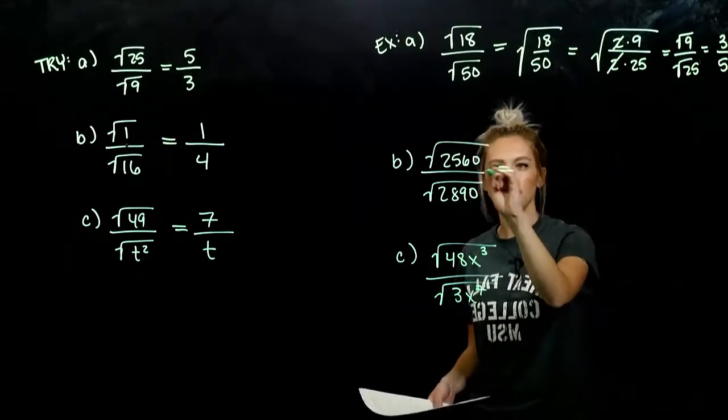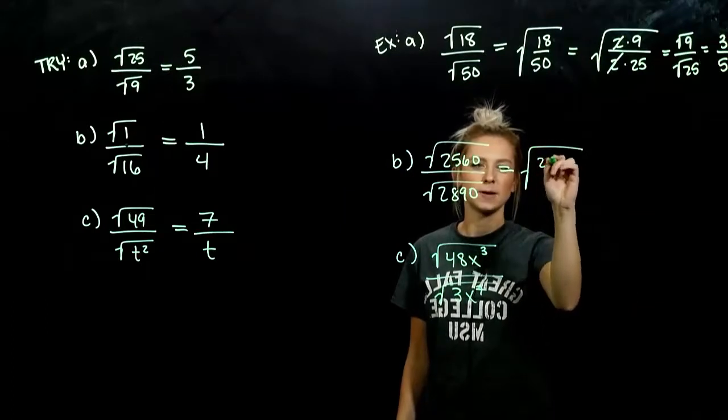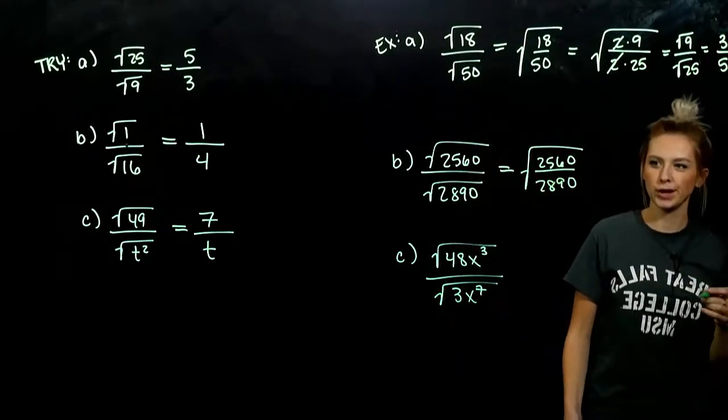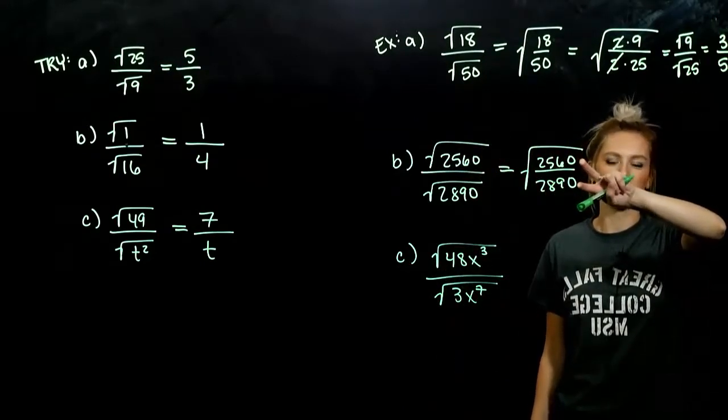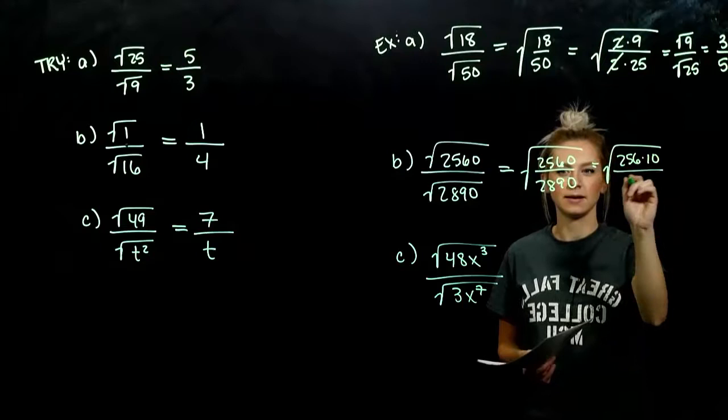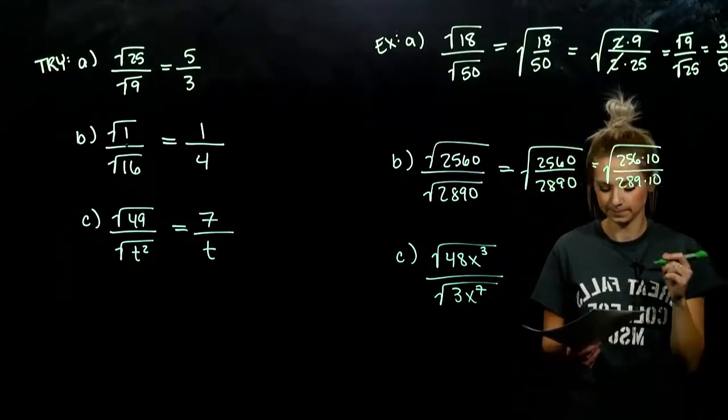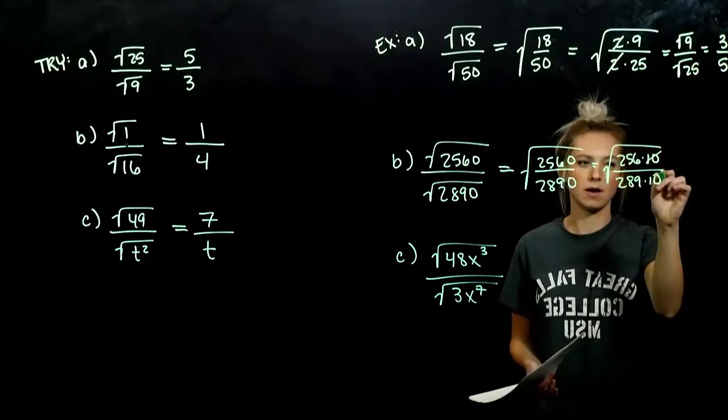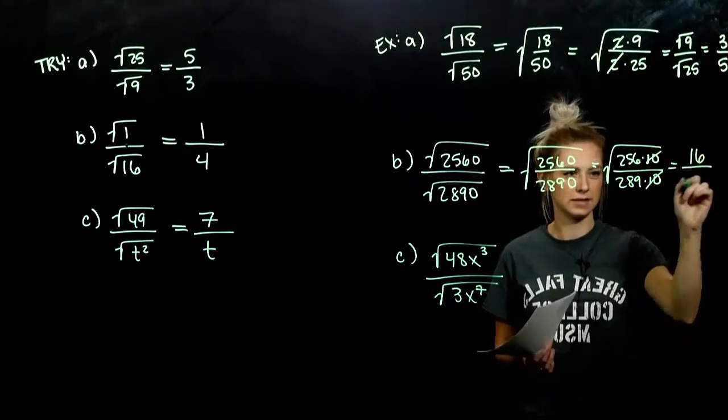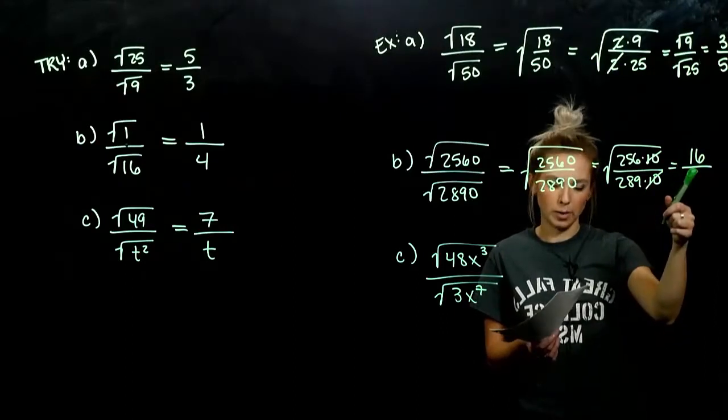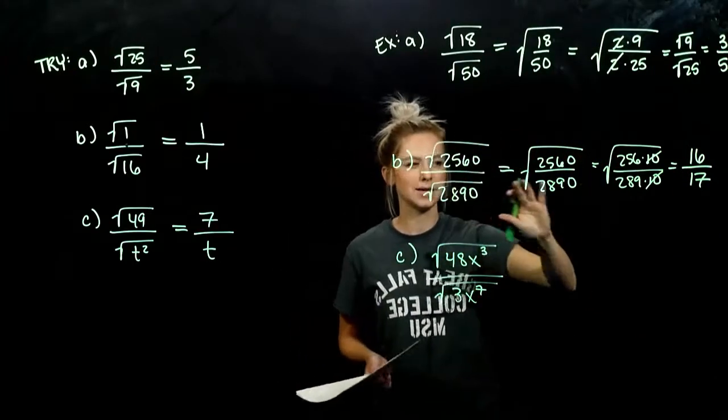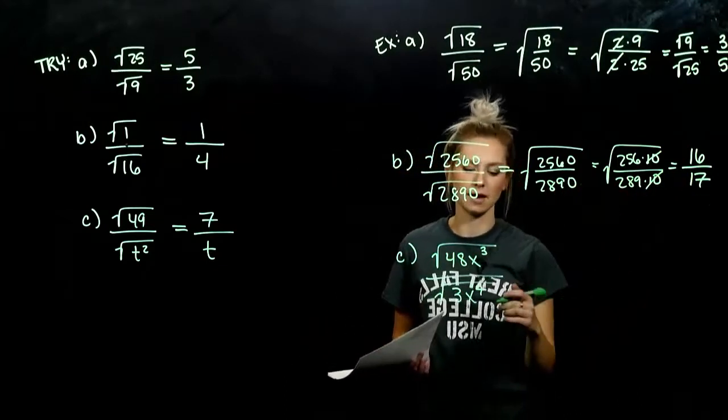For part B, again, the radicands are both positive. So we can combine it into one quotient. And just looking at these two numbers, what do they share in common? A factor of 10. So 256 in 10 and 289 in 10. Same thing divided by the same thing is gone. And we can evaluate these individually. The square root of 256 is 16. Square root of 289, a little bit bigger than that one, 17. And I understand these numbers are larger, harder to see, but the same concept. We can take out something that's common.